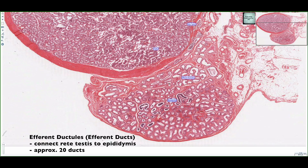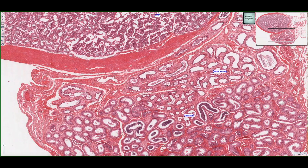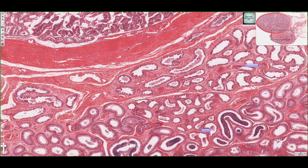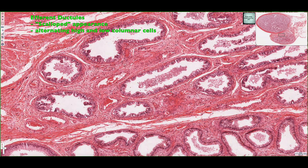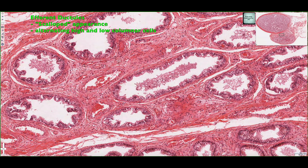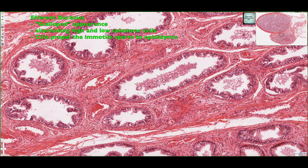The efferent ductules in man — there are approximately 20 of them — connect from the mediastinum testis, where the rete testis are found, to the epididymis. The efferent ductules have a characteristic scalloped appearance, meaning alternating high columnar cells with low columnar cells. At the apex of these cells, cilia help move the non-motile sperm towards the epididymis.